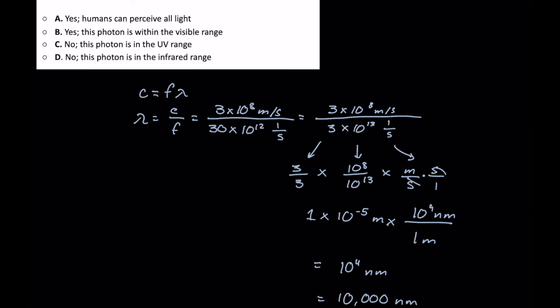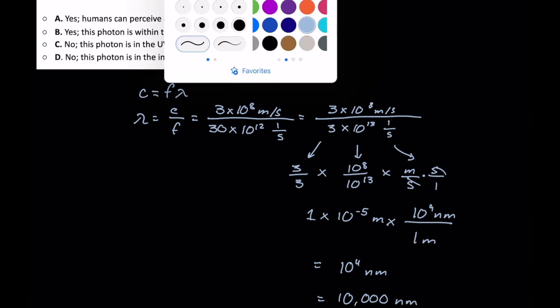But we should know, just from memorizing the order of our electromagnetic spectrum, that 10,000 is going to be much greater than that red. And something that has a longer wavelength than red is infrared radiation, or having a lower frequency than red. Therefore, our correct answer here will be D.